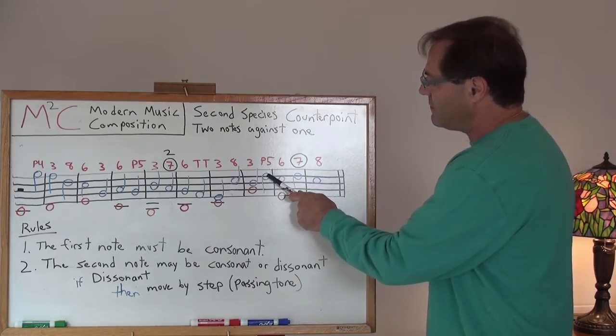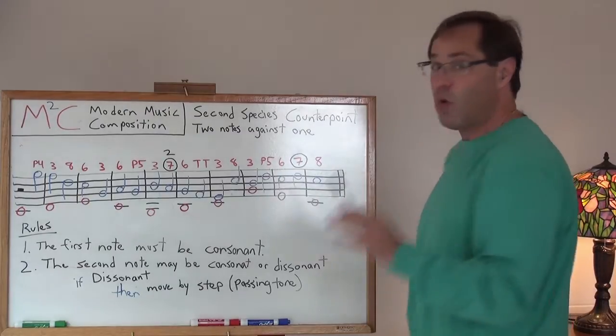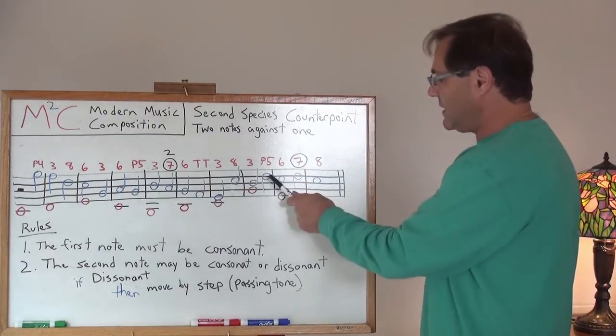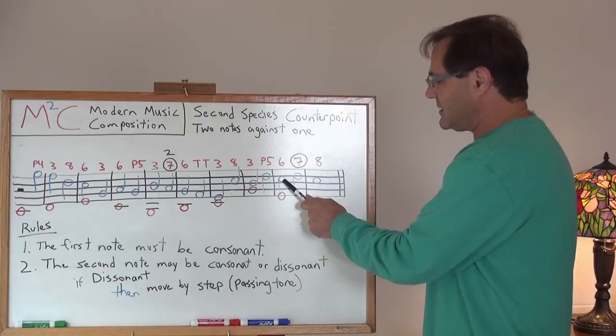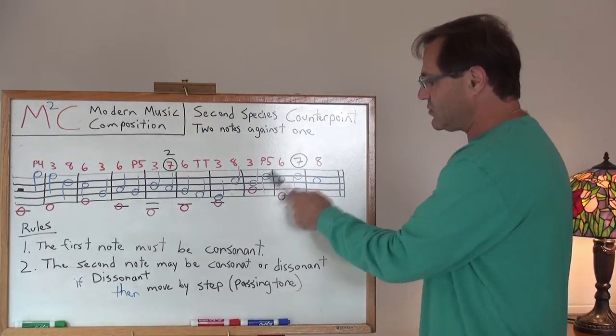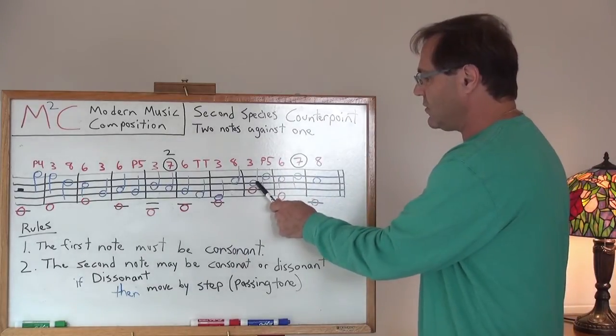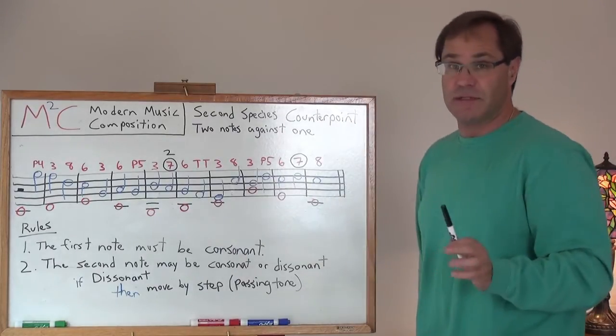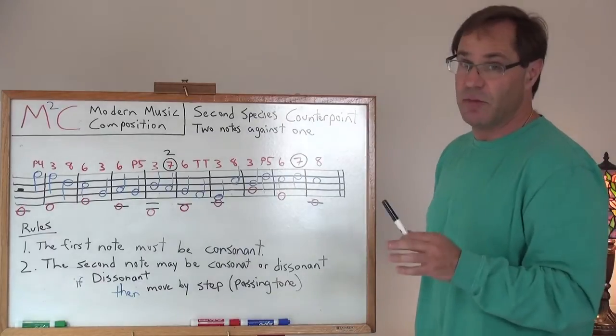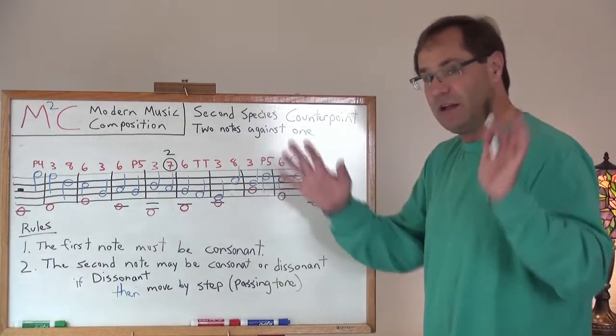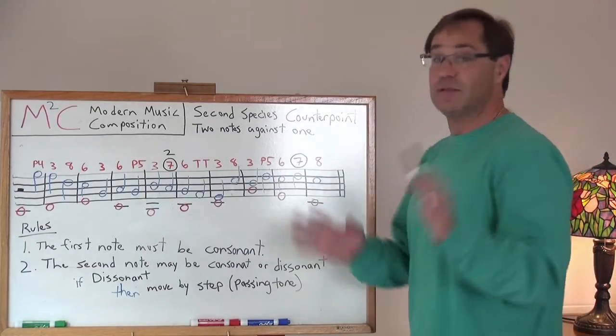And then that's sort of a quasi passing tone because I'm taking D down to C even though this isn't being treated as a dissonance. It's still sort of acting as a passing tone even though its previous note isn't a minor or second, a minor second or a major second away from it. You know, it is what it is.